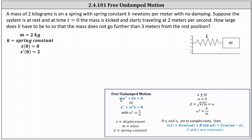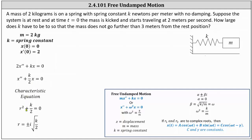In our case the differential equation is two x double prime plus k x equals zero. Dividing through by two we have x double prime plus k divided by two times x equals zero. We can solve the differential equation using a characteristic equation which is r squared plus k divided by two equals zero. Solving for r we have r equals plus or minus i times the square root of k divided by two.